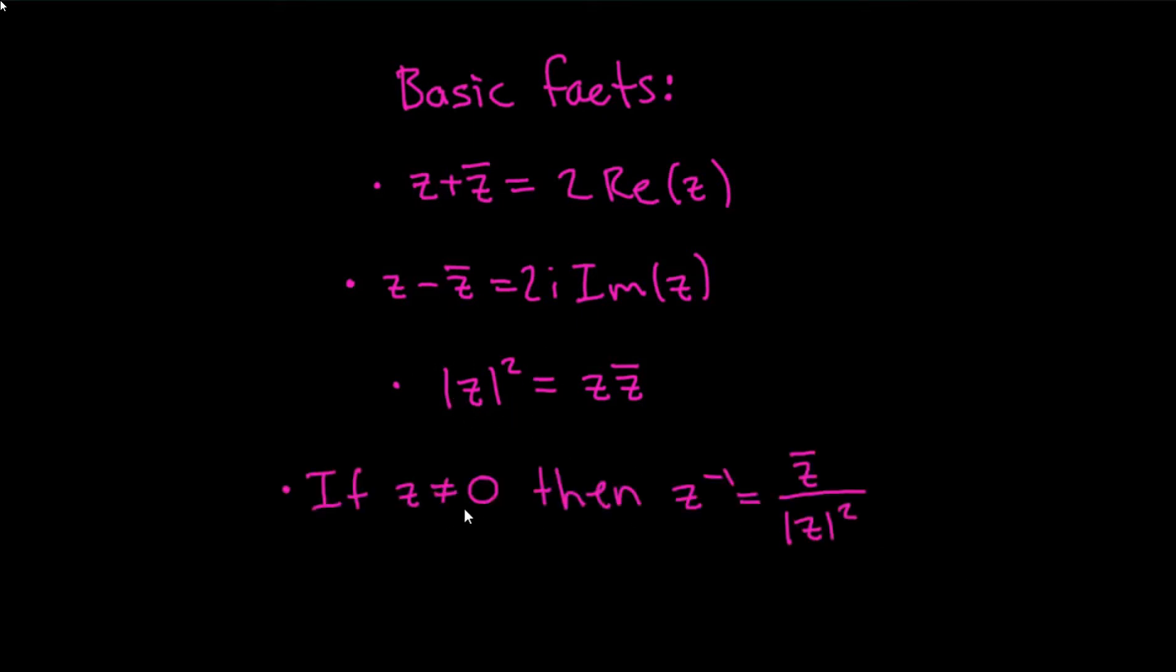Finally, if z is not 0, then the modulus of z is not 0, and you can just rearrange the third fact here to get a formula for the inverse of z. The inverse of z is equal to the complex conjugate of z divided by the modulus of z squared.